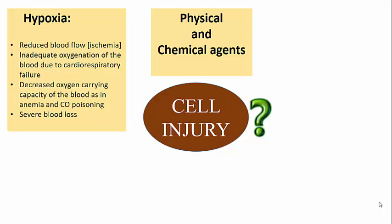The second cause of cell injury is physical and chemical agents. Physical agents include mechanical trauma, extremes of temperature, radiation injury, and electrical shock. As for chemical agents, there are numerous chemicals that can cause cell injury — even oxygen can be injurious in higher concentrations, and even glucose can be injurious in higher concentrations. Almost all chemicals can potentially be injurious.